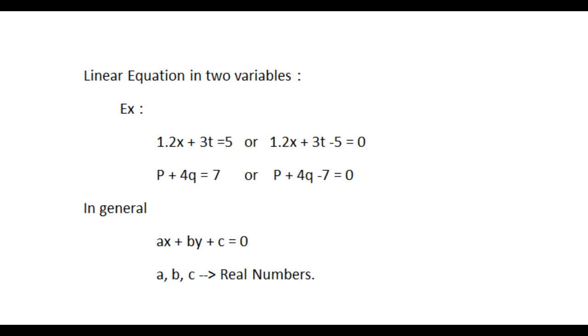Next, we will see about linear equation in two variables. Consider the example 1.2x plus 3t equal to 5. We can rewrite this equation as 1.2x plus 3t minus 5 equal to 0. Consider another example p plus 4q equal to 7 or p plus 4q minus 7 equal to 0.